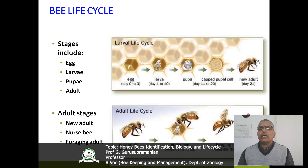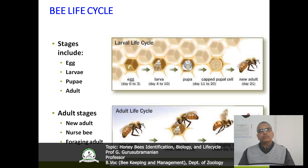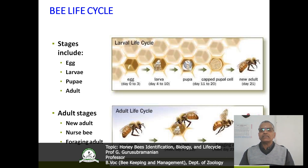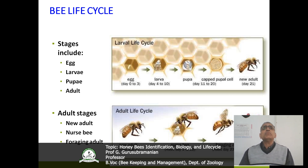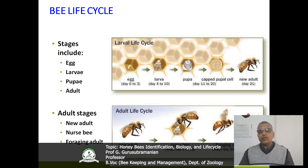Now we will discuss about the bee life cycle. The bee is an insect and it follows complete metamorphosis — there are four stages: egg, larvae, pupae and adult. The egg stage is around 3 days, larval stage is around 5 to 6 days, pupa is around 10 days, and the total life cycle duration is 21 days. Adult stages include the new adult, the nurse bee, and the foraging adult.